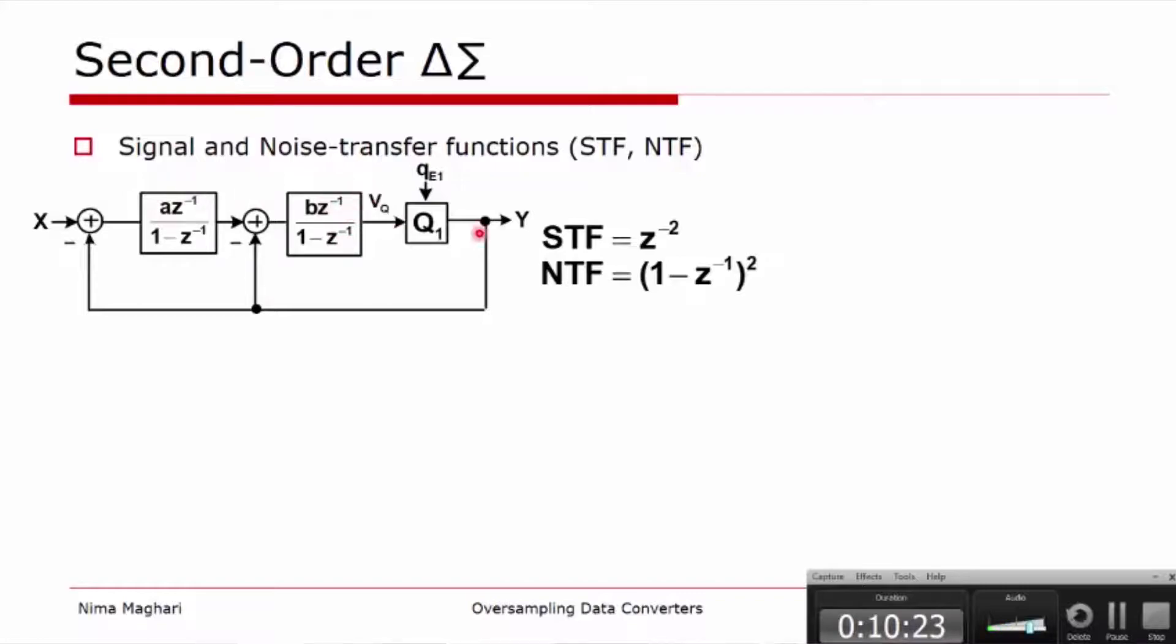There are two quantities that we are interested in: the signal transfer function, which is transfer function from the input to the output, and the noise transfer function. We can see the signal transfer function is basically just two delays and the noise transfer function in this case is a second-order case.